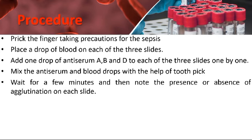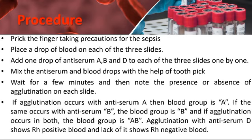Then wait for a few minutes and note the presence or absence of agglutination on each slide. If agglutination occurs with antiserum A, then the blood group is A.